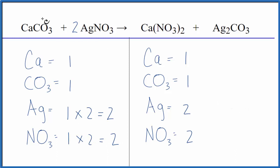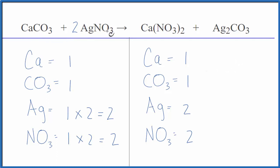So by counting these polyatomic ions as just one thing, when they appear on both sides of the equation, that makes the balancing a lot easier. This is Dr. B with the balanced equation for calcium carbonate plus silver nitrate. Thanks for watching.